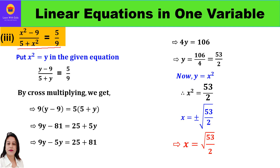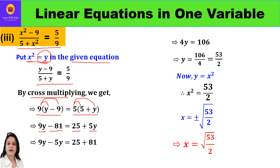Again it's a quadratic equation because the power of x is 2, so we convert it into a linear equation by putting x² = y. We get: (y - 9) / (5 + y) = 5/9. Cross multiplying: 9(y - 9) = 5(5 + y). Opening brackets: 9y - 81 = 25 + 5y. Taking like terms: 9y - 5y = 25 + 81, so 4y = 106.